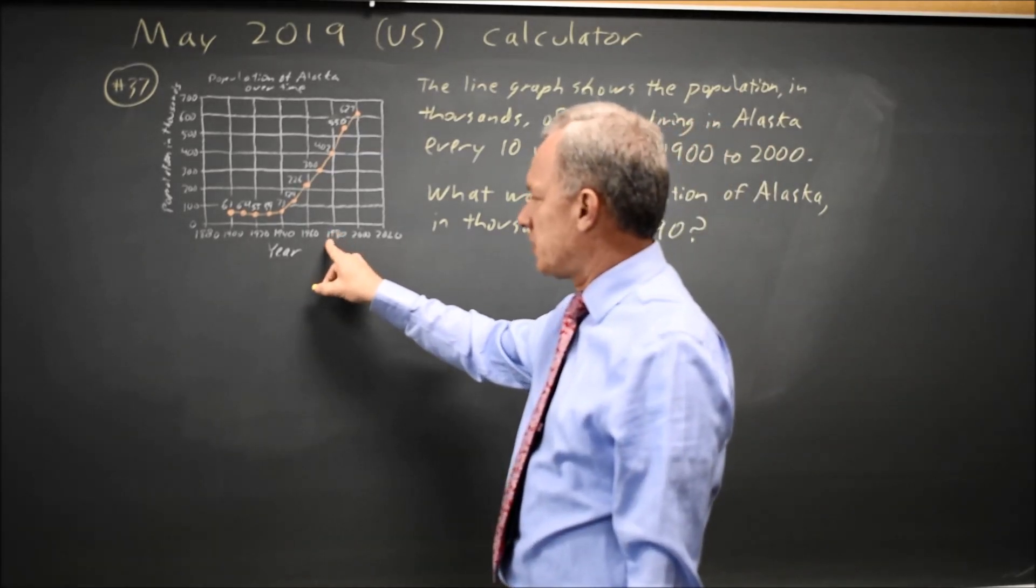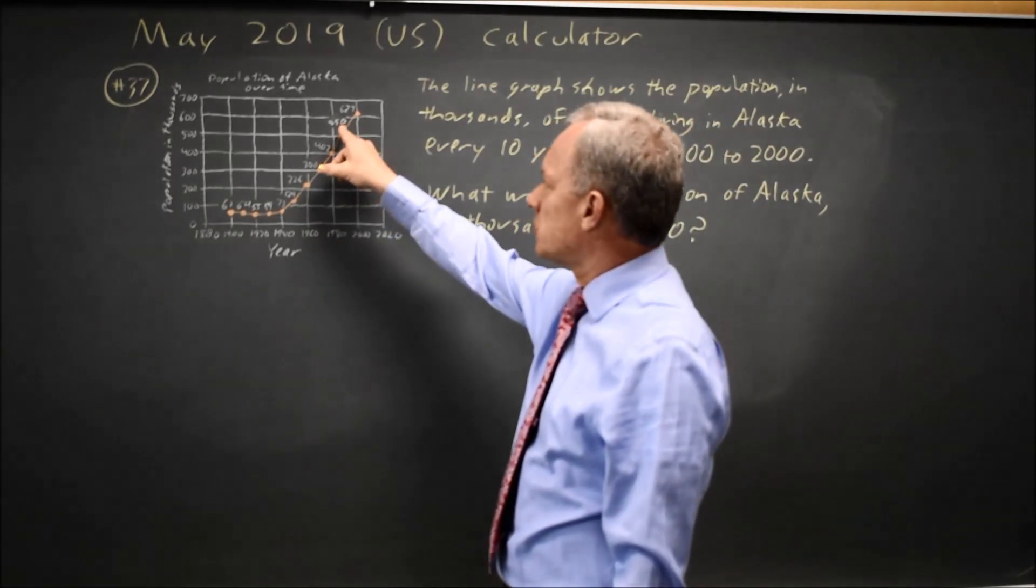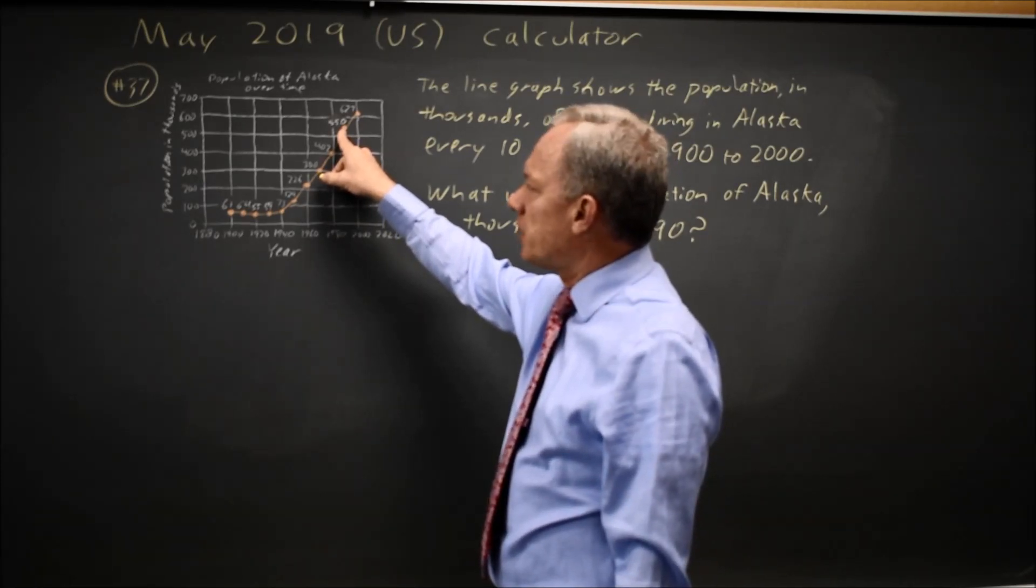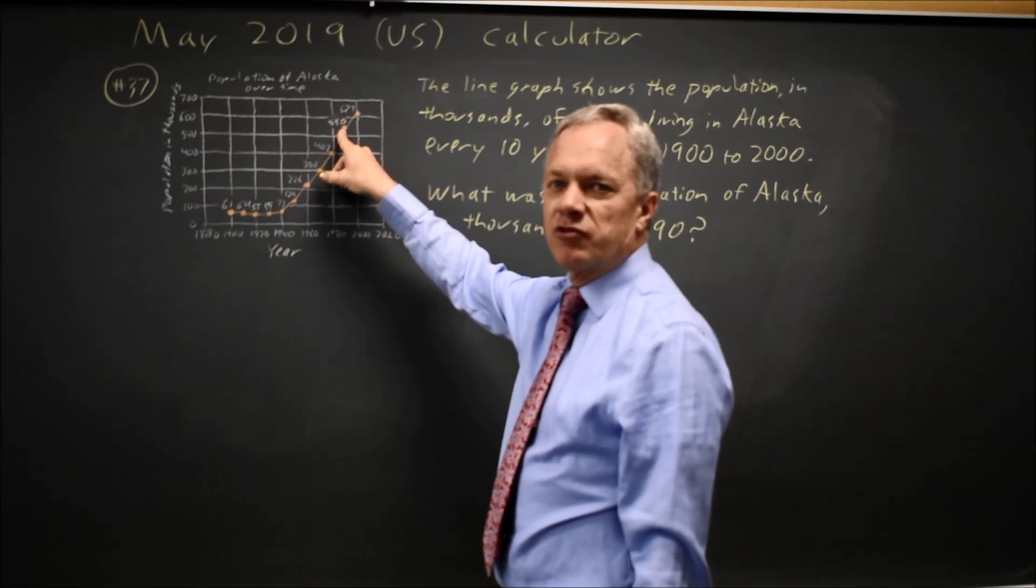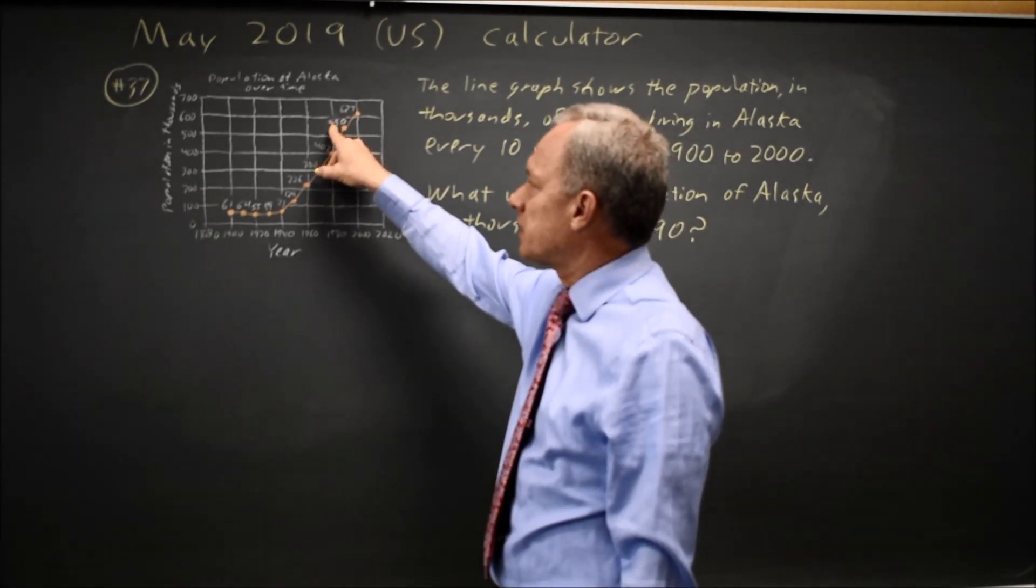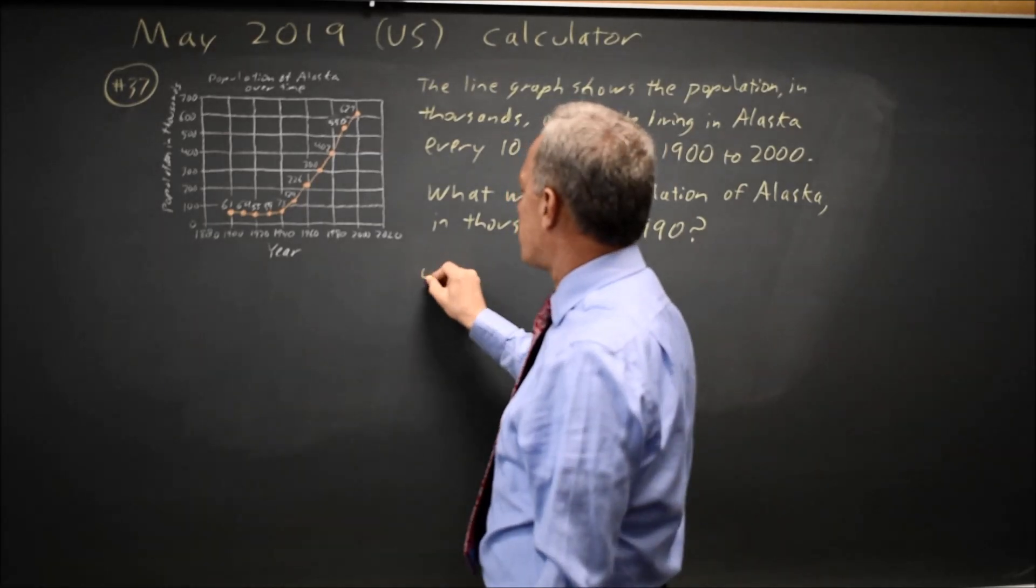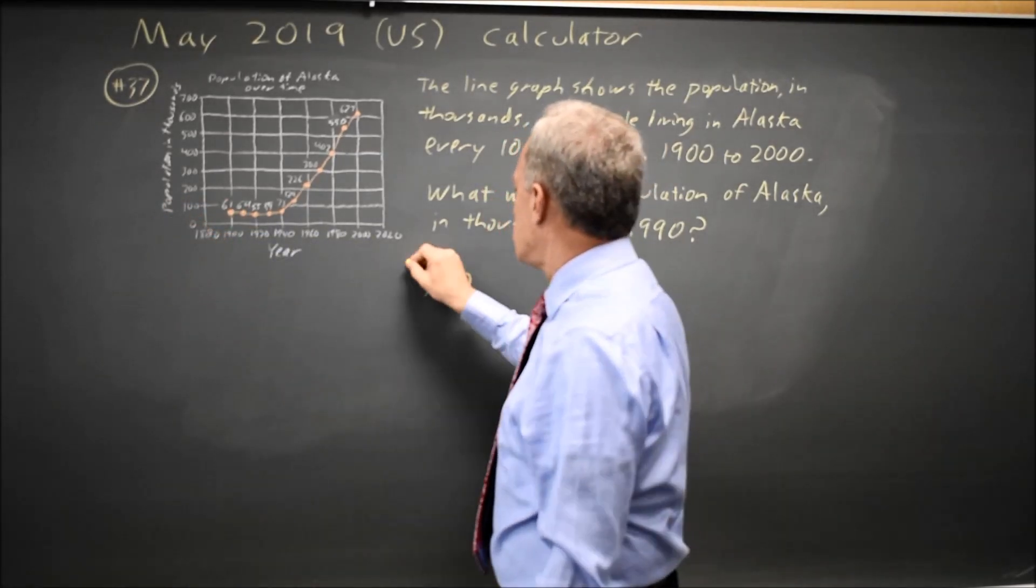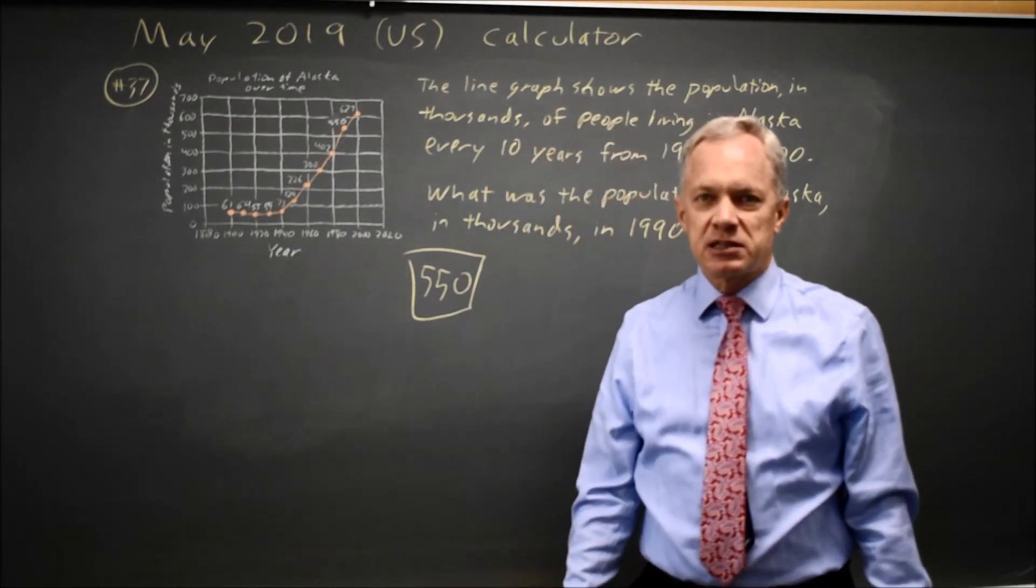1990 is halfway between 1980 and 2000, so it's this point right here. The point looks like it's about halfway from 500 to 600, but the value on the point is labeled exactly, so you must use that value rather than an estimate. That value is 550 in thousands, so you would write in 550 and that would be the answer.